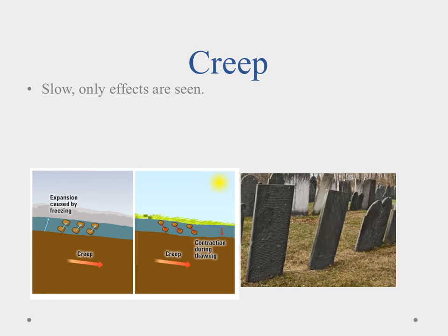Finally, creep is really slow — that's the key thing to remember. It's caused by repeated freezing and thawing: freezing causes expansion, thawing causes contraction. Over time, this fluctuation in the soil causes objects that once stood upright — like tombstones, fence posts, and telephone poles — to gradually tilt downhill. You can really only see the effects of creep over a long period of time. That's it for this video — good luck on the lessons and quizzes.